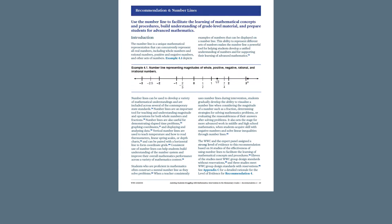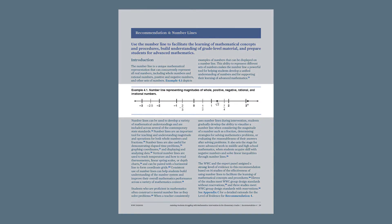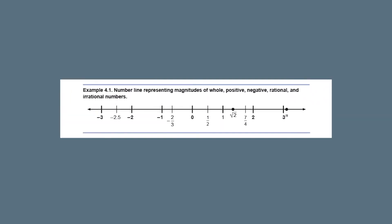The number line is a unique mathematical representation that can represent all real numbers, including whole numbers and rational numbers, as well as positive and negative numbers. The number line's ability to represent different sets of numbers makes it a powerful tool for helping students develop a unified understanding of numbers and for supporting their learning of advanced mathematics.